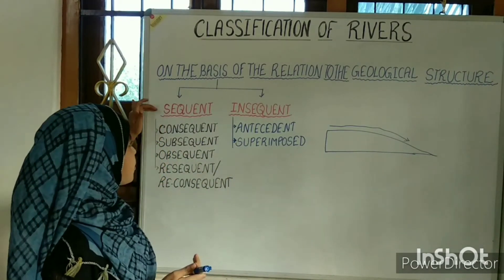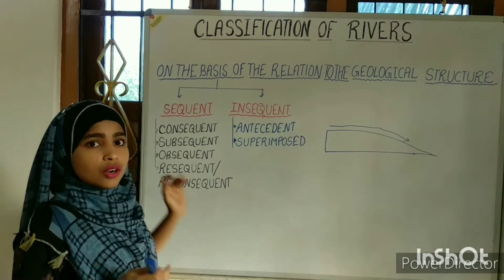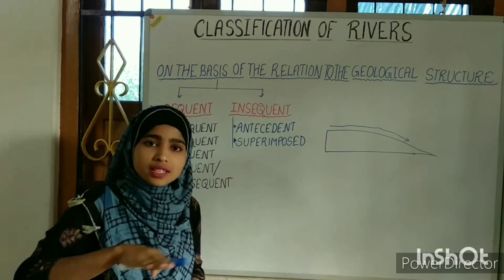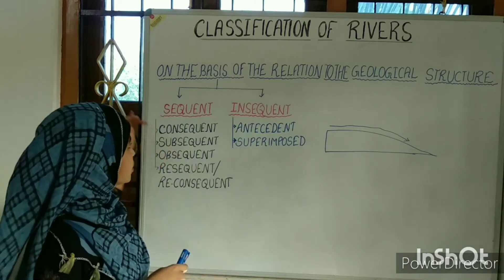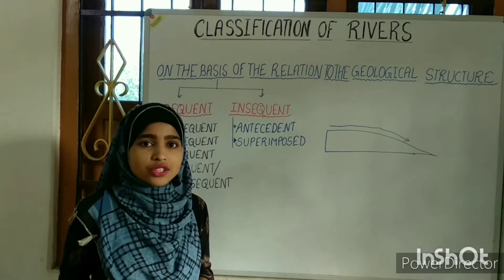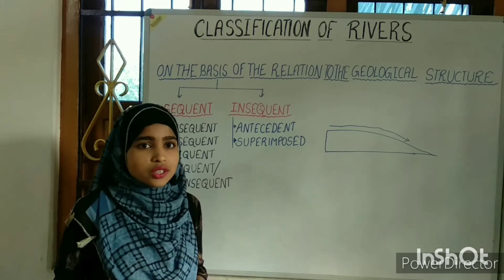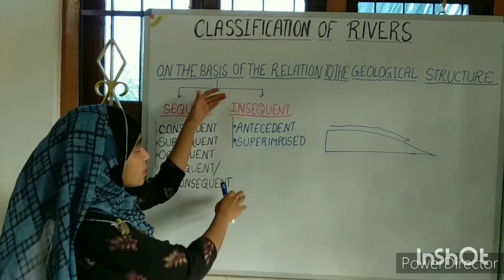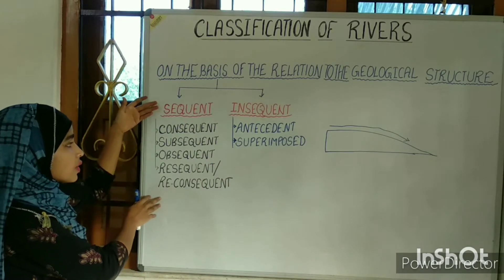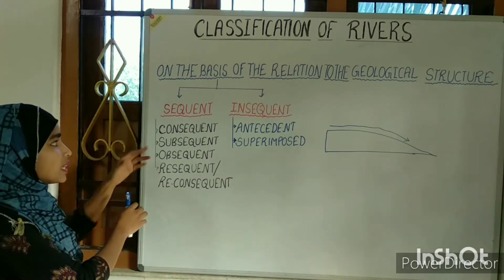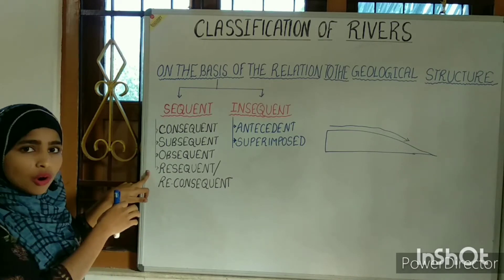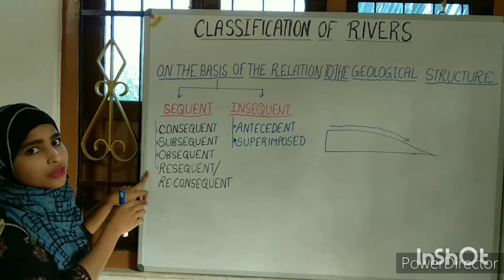So what is the sequent river? The river which follows the regional slope — the geological structure — is known as the sequent river. And the river which does not follow the regional or geological structure is known as the insequent river. The sequent river is also classified into four groups: the consequent, subsequent, obsequent, and resequent or reconsequent streams.